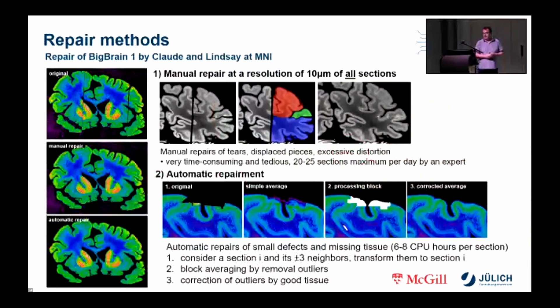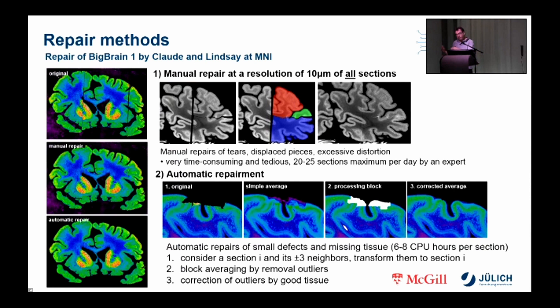In the following, we look at the repair approach as done by Claude and Lindsay for the BigBrain 1 dataset. In the first step, all large artifacts such as shifts — shown in the example above — are corrected manually in all sections. Since an average maximum of 20 to 25 sections can be repaired by one expert per day, this results in an enormous workload. For a typical brain, this task alone took three to four years.